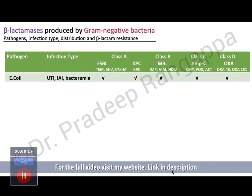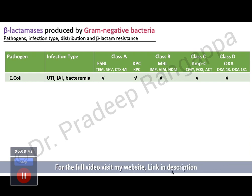When you look at what organisms produce these classes, all the organisms we deal with today in our ICU produce all these enzymes. E. coli, which causes UTI, intra-abdominal infections, or bacteremia, produces all classes — A, B, C, and D. Class A is mainly ESBL and KPC. Class B is the most dreaded — metallobeta-lactamases — resistant to many antibiotics. Class C is AMP-C for which we have some antibiotics.